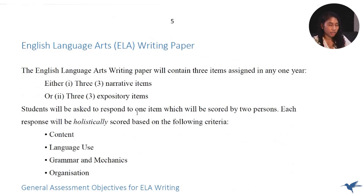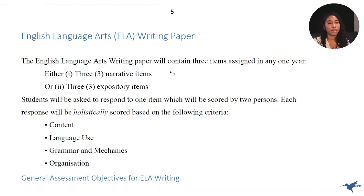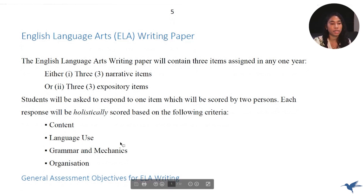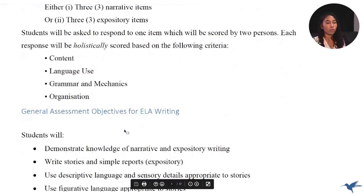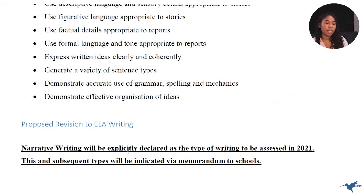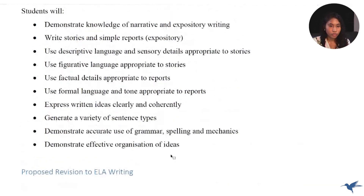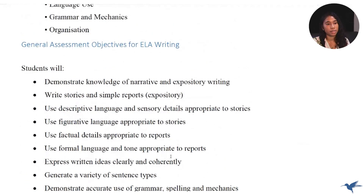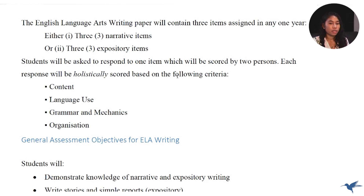We'll go through the writing paper first — creative writing. This paper contains three items in any one year: either three narrative items or three expository items. However, we should know by now that the narrative writing style will be assessed this year, 2021, so focus should be placed on that. Students will be asked to respond to one item — you're writing one essay.